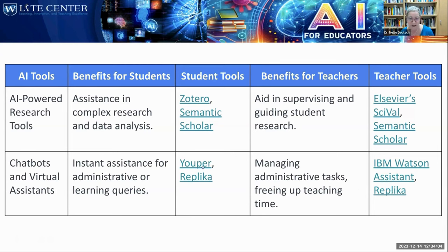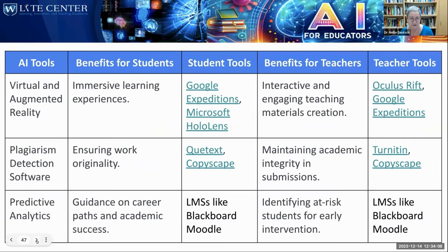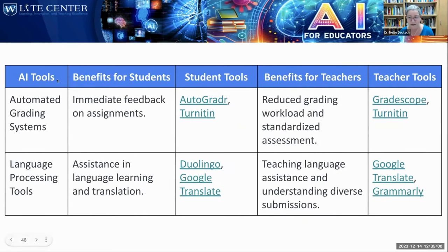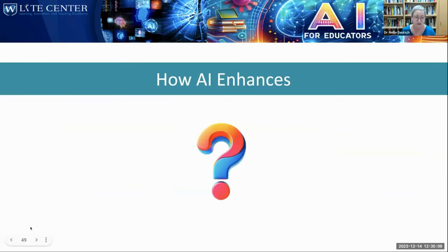AI-powered research tools — you're probably familiar with Zotero, and Semantic Scholar that I mentioned. For chatbots and virtual assistants, Replika is amazing and also available to students. For plagiarism detection, there's QText and Copyscape for students, and Turnitin — though I've heard a lot of negative things about Turnitin lately. Copyscape doesn't really work either. It's better to get our students on board instead of trying to catch them, because due to the generative nature of generative AI, it keeps doing different creative things — there's no way to catch it.